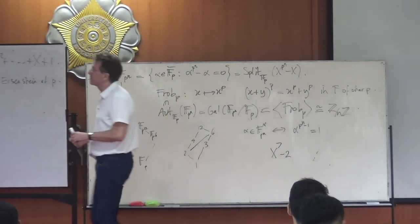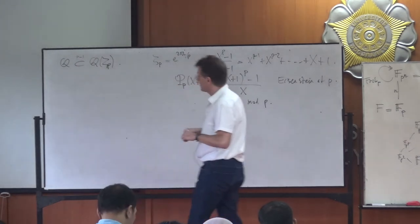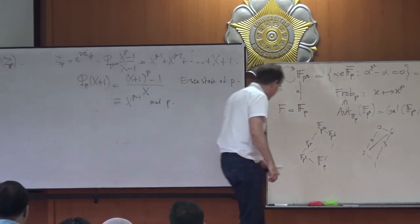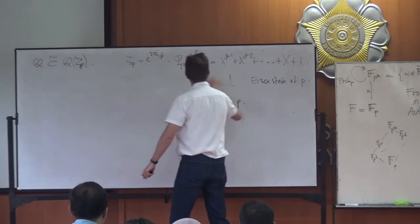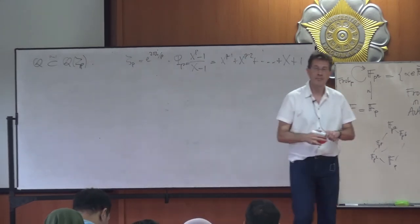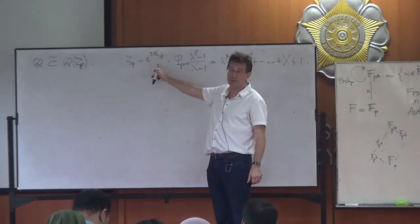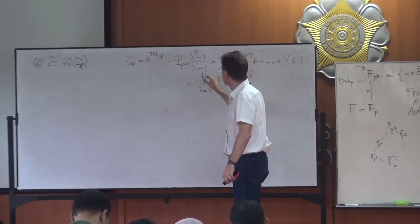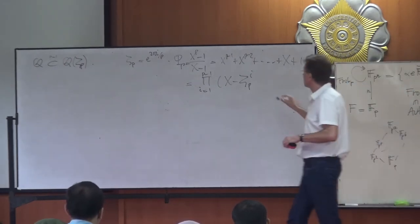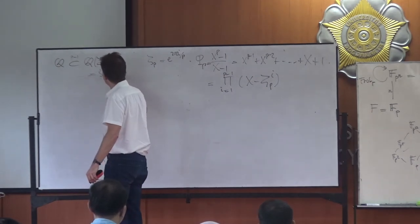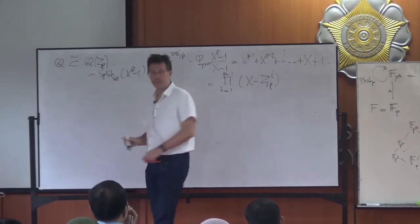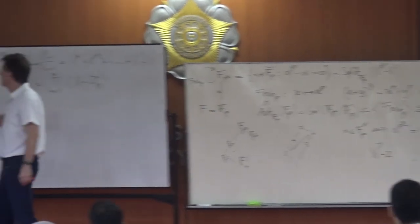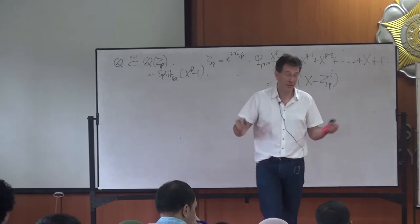Since Φ_p is irreducible, Q(ζ_p) is an extension of degree p − 1. It is the splitting field of x^p − 1 over ℚ, since all p-th roots of unity are powers of ζ_p: Φ_p = ∏_{i=1}^{p−1} (x − ζ_p^i). Any automorphism of Q(ζ_p) is determined by where it sends ζ_p, since everything else is a power of ζ_p.